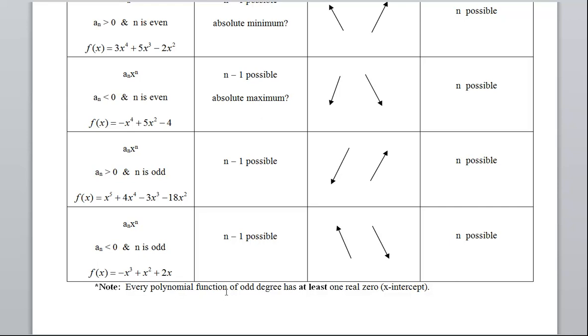Now, my note down here, it says, every polynomial function of odd degree has at least one real zero. Since the ends are going in opposite directions, that means that it has to at least hit the x-axis once. These guys, on the other hand, the even ones, they don't have to. That's all that's referring to.